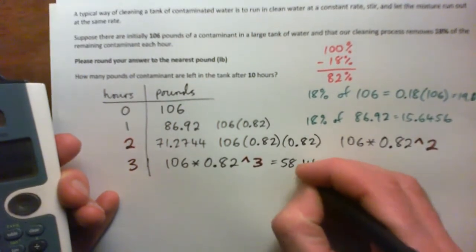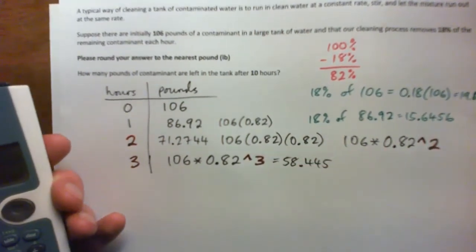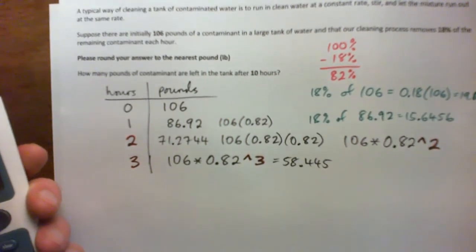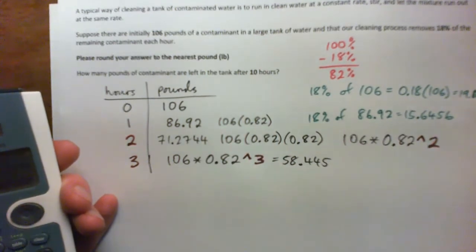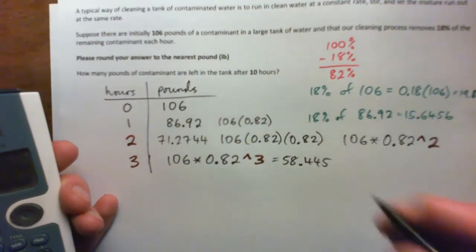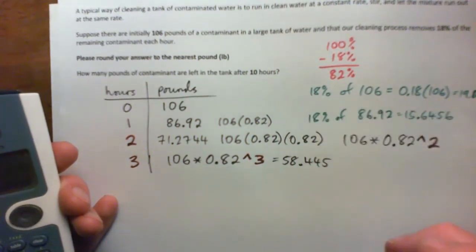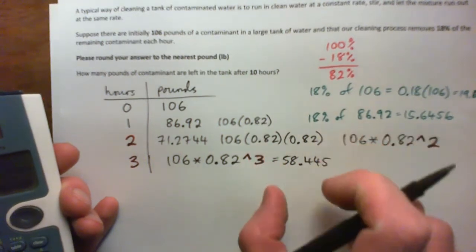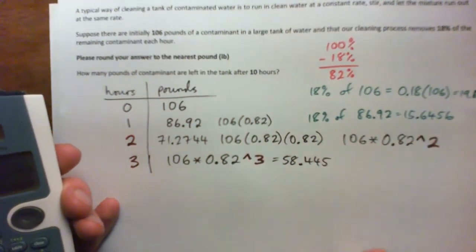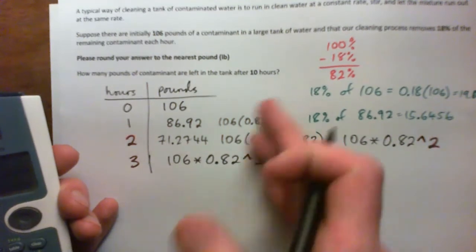Is this a linear function or an exponential function? This is an exponential function and it's decreasing. Therefore, it's exponential decay. Why is it exponential? Because we're multiplying by a percentage after each time period, each year or each hour or each second.